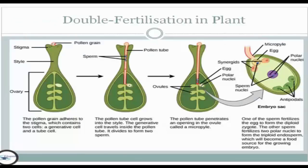As you can see in the image, this is double fertilization in a plant. The pollen grain adheres to the stigma and contains two cells: the generative cell and a tube cell. The pollen tube grows into the style, and the generative cell travels inside the pollen tube and divides to form two sperm cells.